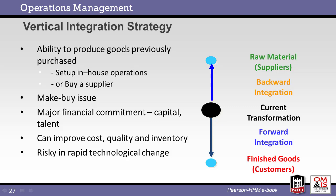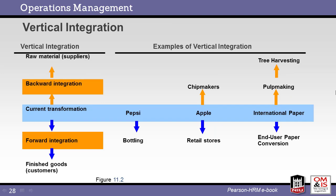Integration choices must be thoroughly analyzed to see if the acquisition of a supplier or distributor adds to the profitability of the overall supply chain, enhances customer value, or adds to another key aspect of the company. Examples of backward integration include Apple owning the chip makers that supply key components, and International Paper owning their own harvesting and pulp making processes. Forward integration is found with Pepsi owning their own bottling plants, Apple owning their own retail stores, and International Paper owning end-user paper conversion processes.